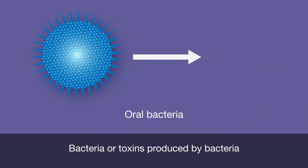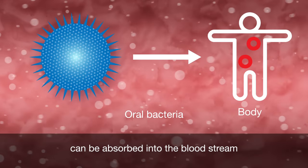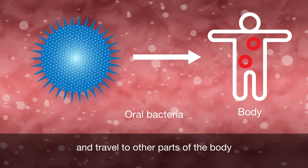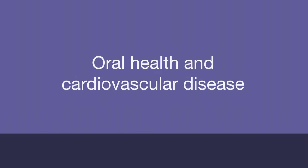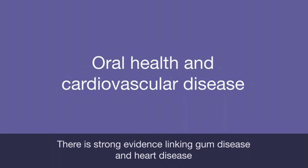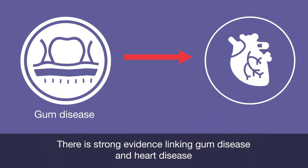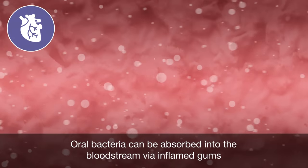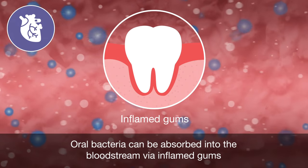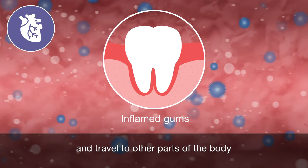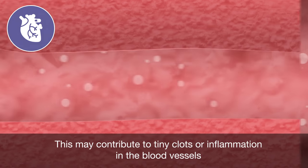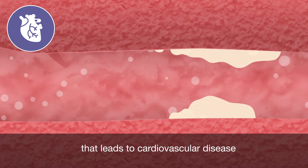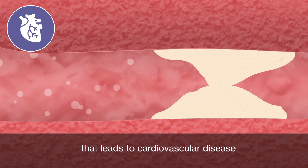Bacteria, or toxins produced by bacteria, can be absorbed into the bloodstream and travel to other parts of the body. There is strong evidence linking gum disease and heart disease. Oral bacteria can be absorbed into the bloodstream via inflamed gums and travel to other parts of the body, which may contribute to tiny clots or inflammation in the blood vessels that leads to cardiovascular disease.